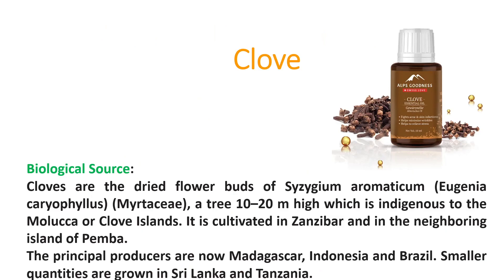Cloves are the dried flower buds of Syzygium aromaticum, also known as Eugenia caryophyllus. The main name that is widely used is Eugenia caryophyllus. Its family is Myrtaceae — a tree 10 to 20 meters high which is indigenous to the Molucca or Cloves Islands, and it is cultivated in Zanzibar and the neighboring island of Pemba.